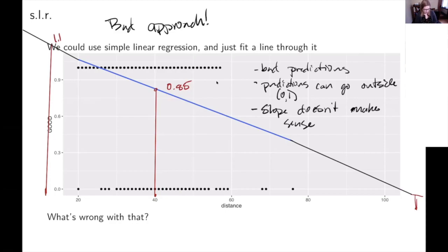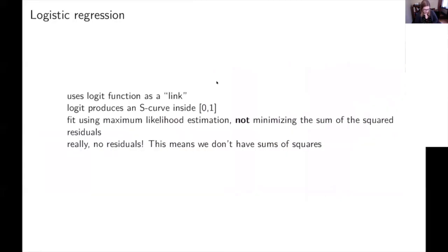And what a better approach is going to be is to use logistic regression. So logistic regression is more complicated in a bunch of ways. One is it uses the logit function as a link.